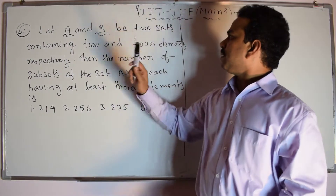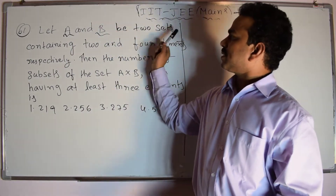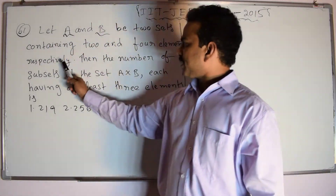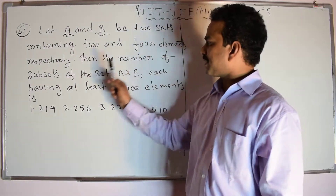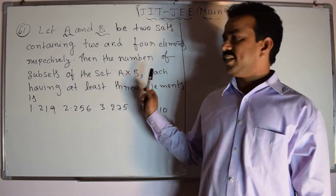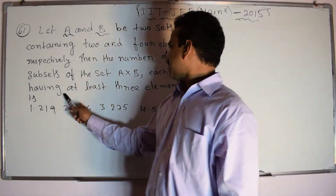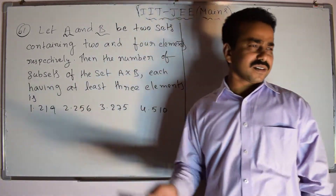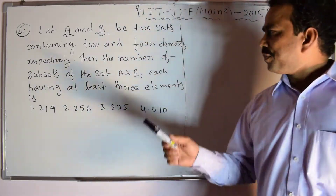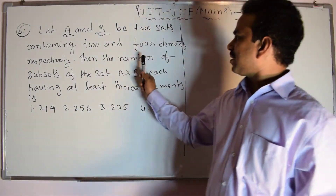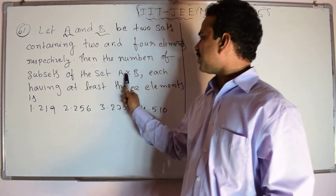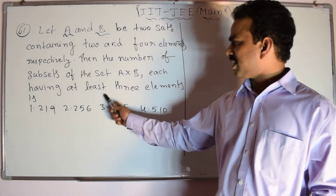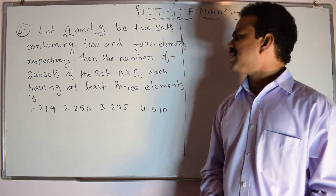Let A and B be two sets containing two and four elements respectively. Then the number of subsets of the set A cross B, each having at least three elements. So our task is to calculate the total number of subsets of A cross B, with the constraint of having at least three elements.